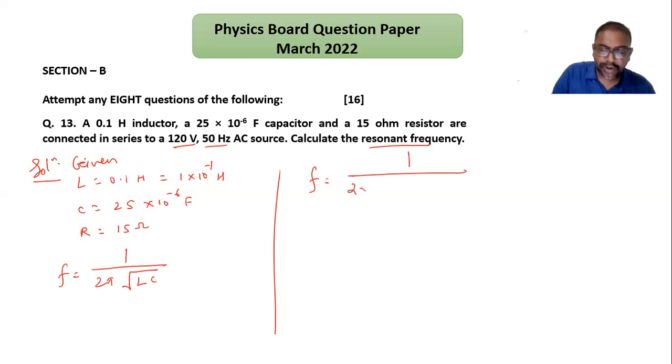1 over 2 × 3.142, then under root L times C. L I can write as 0.1 multiplied by C, which is 25 × 10⁻⁶. So I can write 2 × 6.284 into root of 0.1 × 25 × 10⁻⁶.